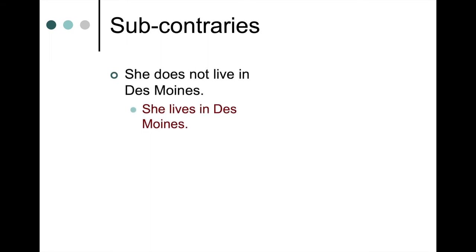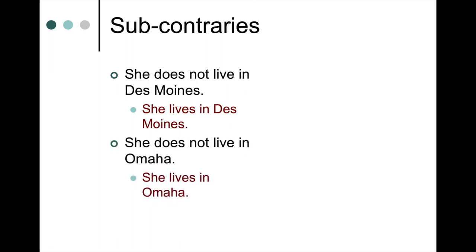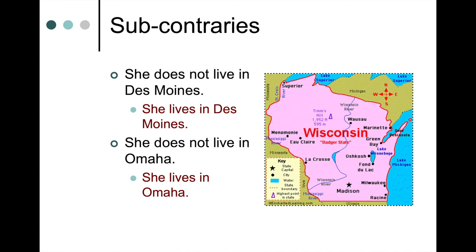Here's another example: She does not live in Des Moines. She does not live in Omaha. If she lives in Madison, Wisconsin, both statements can be true at the same time — she does not live in Des Moines, and she does not live in Omaha. So those two statements are not incompatible. But the denials — 'she lives in Des Moines' and 'she lives in Omaha' — are incompatible, because you can't live in two places at once. So the original statements can be true at the same time, but the denials are incompatible — these are subcontrary statements.